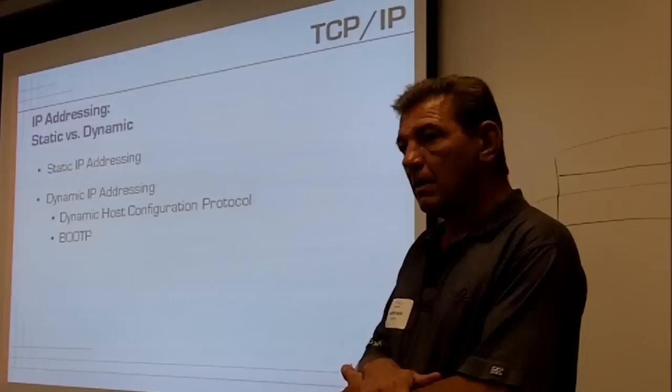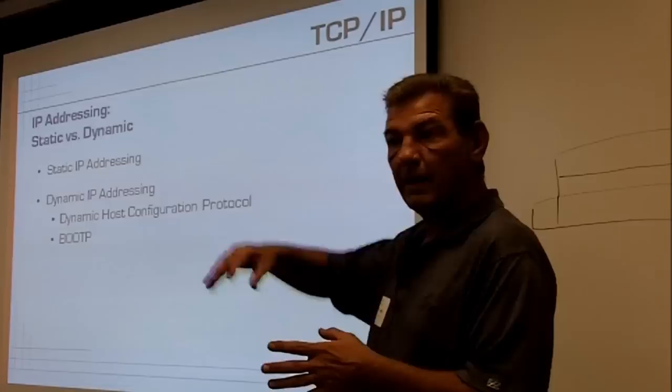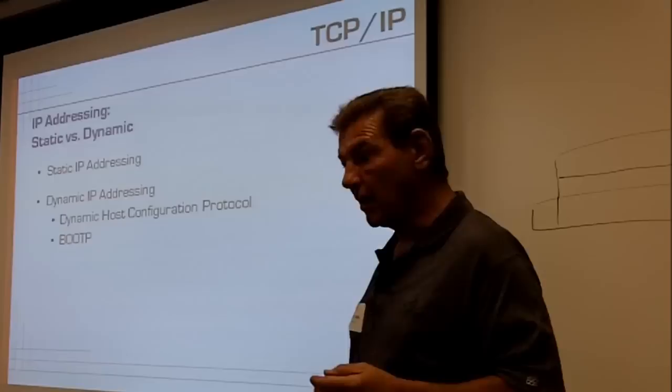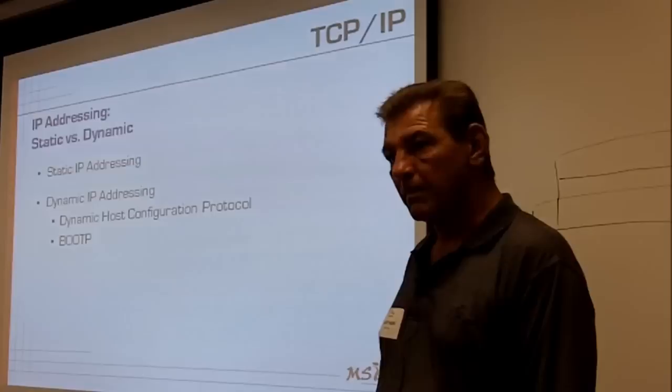The router will normally be your default gateway, responsible for taking you from your local subnet out to the internet. It will have an internal IP address — let's say 192.168.0.1 — so then your PC will have a default gateway of 192.168.0.1.